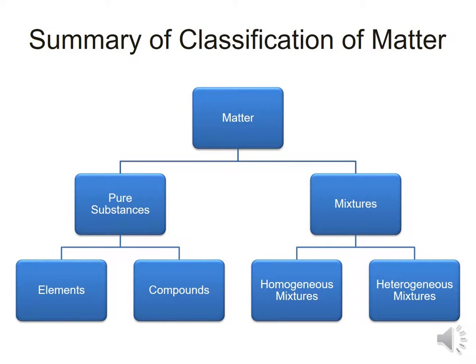In summary, this classification system looks like this: we start with all matter at the top, then ask whether it's a pure substance or a mixture. If it's a pure substance, it can be either an element or a compound. If it's a mixture, it can be classified as either a homogeneous or heterogeneous mixture.